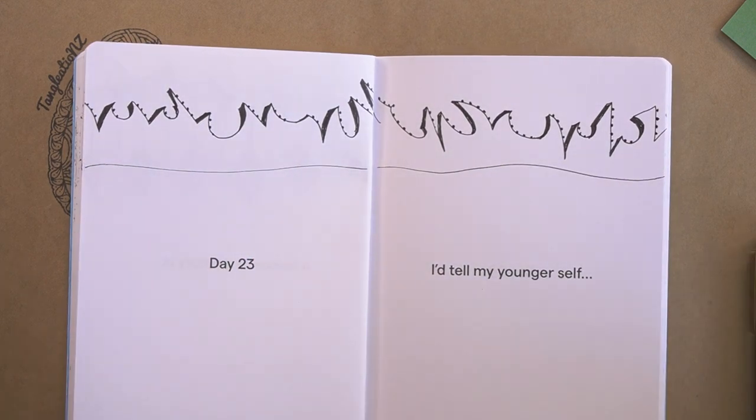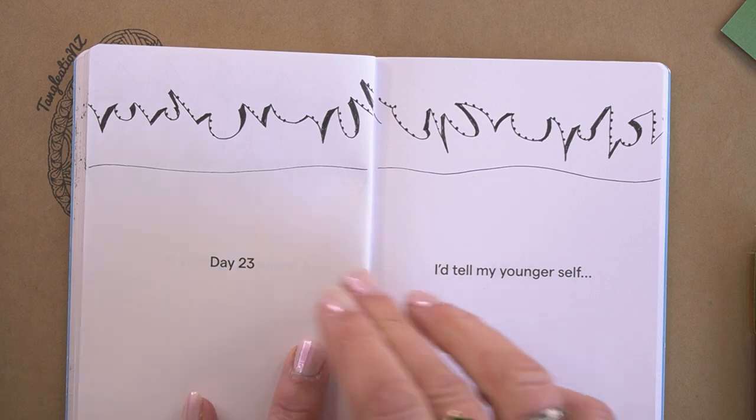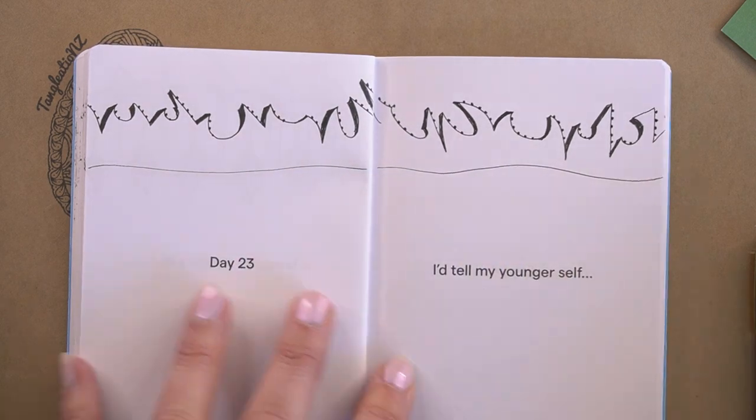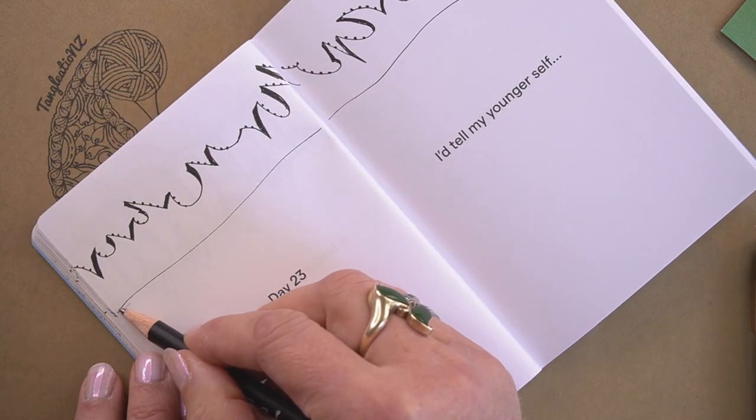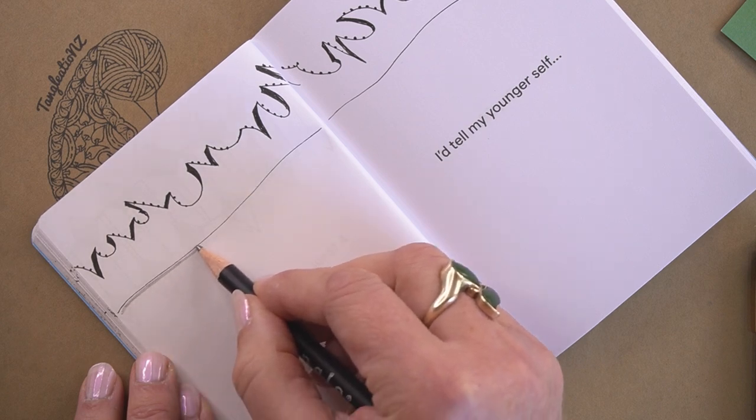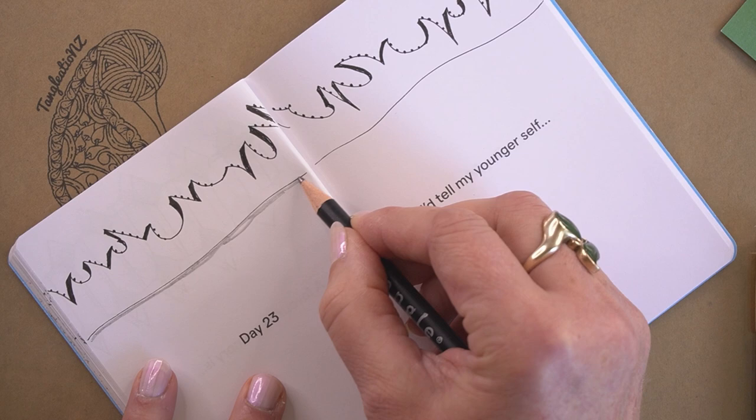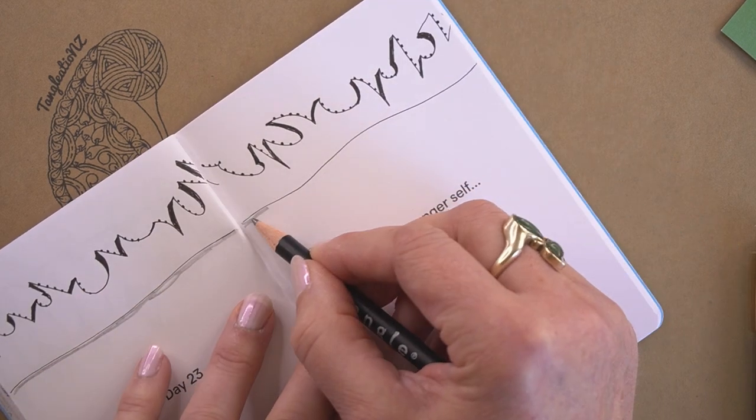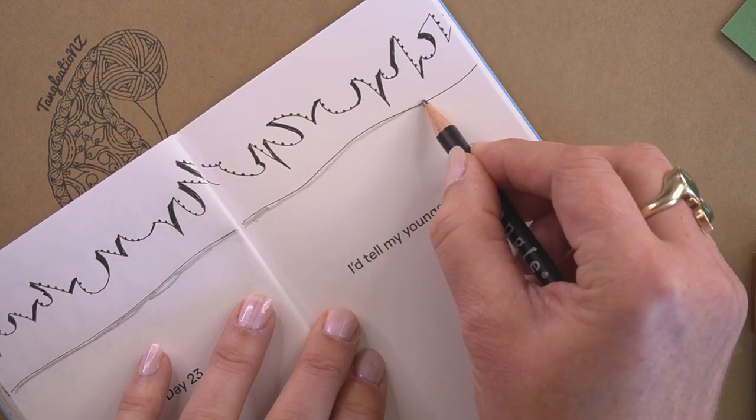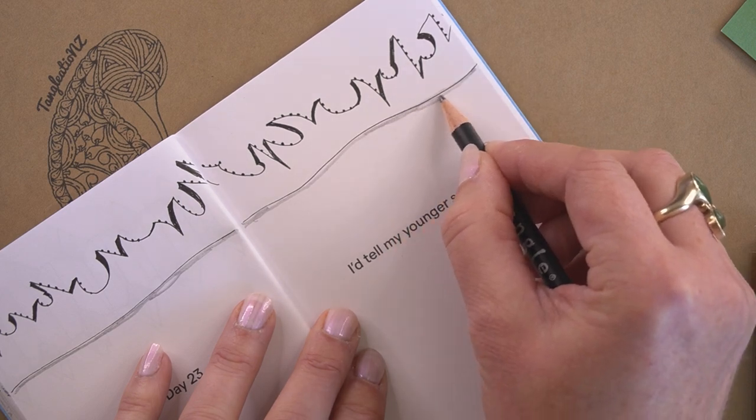So there we go our Hokusai tangle coming along. If you'd like to add a bit of shading I'm actually just going to pop a little bit of shading just right underneath my line here just to sit the whole tangle up off the paper.